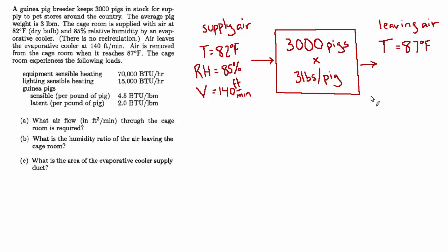So for the first question about what air flow is required, that's really going to be based on the sensible cooling requirement only. And then some amount of humidity will be added to that air while it's in the cage room. And then when it leaves, it'll be more humid. So let's summarize all the loads and get a handle on what the total sensible and total latent load are inside the cage room. And we can make a table for this.